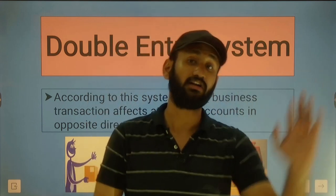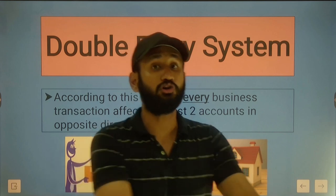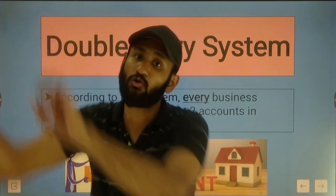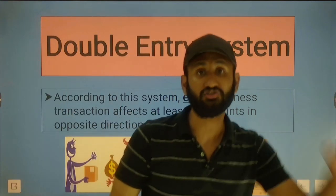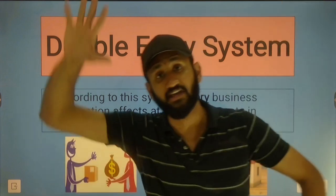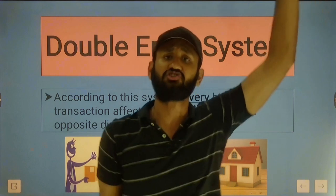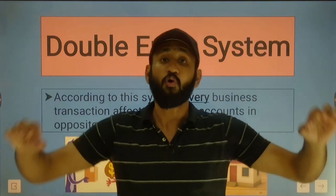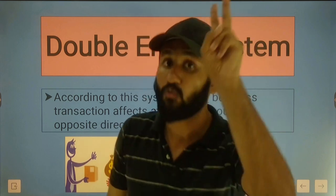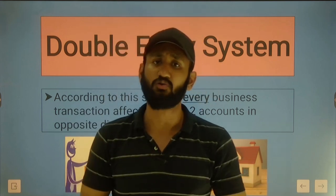Every transaction affects two accounts - one will be debit and the other will be credit. If you purchase goods, goods increase and cash decreases. If you make sales, cash increases and goods decrease. If you buy machinery, machinery increases and cash decreases. If you pay rent, rent increases and cash decreases. Every transaction, one thing will be debit and the other will be credit.